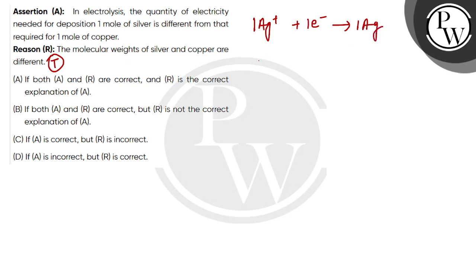But if I say copper, if I have to deposit 1 mole of copper, then I have to take Cu2+. Then I will add 2 mole of electron. Then I will deposit 1 mole of copper.